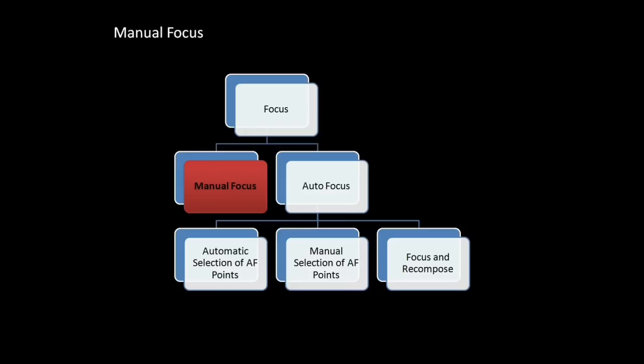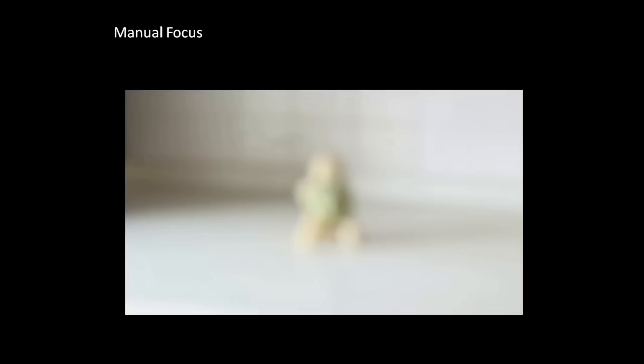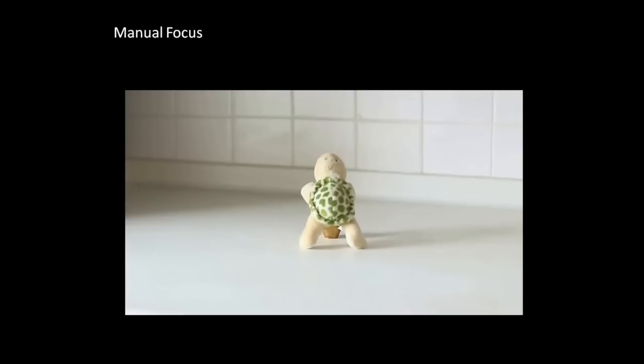Let's first talk about manual focus. If you opt for manual focus you will have to slide the switch to MF or manual focus, and you will have to use the manual focus ring in order to adjust your focus. Here is an example of manual focus — I have switched the slider to MF. Now I will move the manual focus ring to focus on my subject until the subject is completely in focus. So you see, this is how manual focus works.